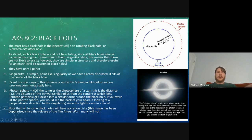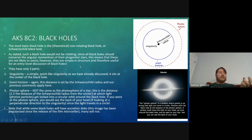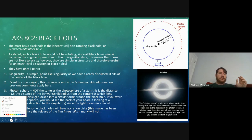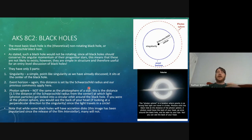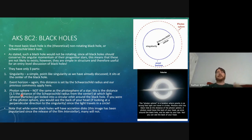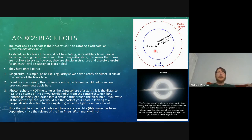A Schwarzschild black hole has only three parts. We've already talked about singularities and event horizons. What's new is something called the photon sphere — note this is two separate words and is not the same as the photosphere of a star. The photon sphere of a black hole sits at 1.5 times the Schwarzschild radius from the center, as shown in the diagram.